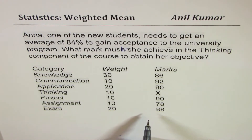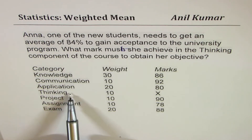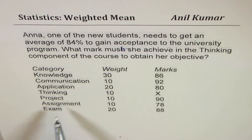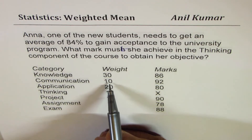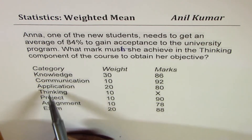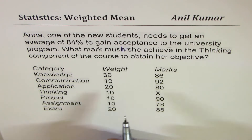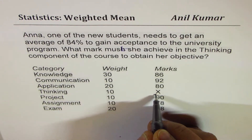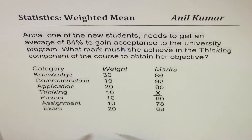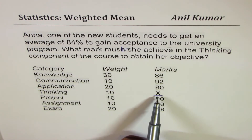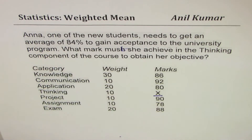We are given some information where the categories are knowledge, communication, application, thinking, project, assignment, and exam. Different weights are given for different categories as per their importance. The marks for thinking are missing. The question is: what should be the value of X so that the average is 84%?